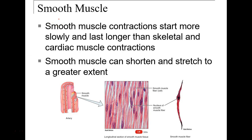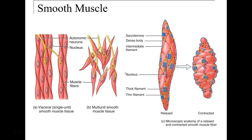Smooth muscle, on the other hand, starts slowly and lasts longer. In the GI tract and blood vessels, it contracts slowly to continue movement without causing fatigue. The smooth muscle fibers intertwine, and as shown here, they shorten during contraction and lengthen during relaxation.